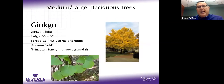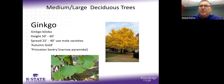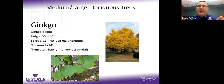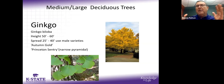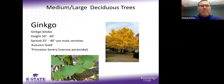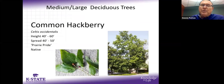Ginkgo offers outstanding yellow fall color. Make sure you get a male selection — the female produces a fruit that smells absolutely terrible. There are columnar upright varieties that fit narrow areas. Ginkgo is the only tree we have with parallel-veined leaves. If you hate raking leaves over several weeks, ginkgo has an uncanny ability to drop all its leaves within two or three hours when it decides it's time. The main knock is it tends to be a slower grower.